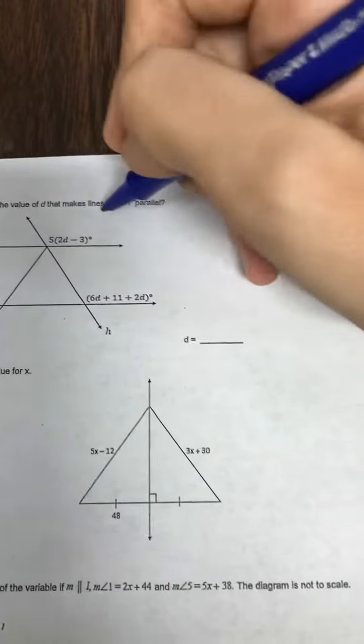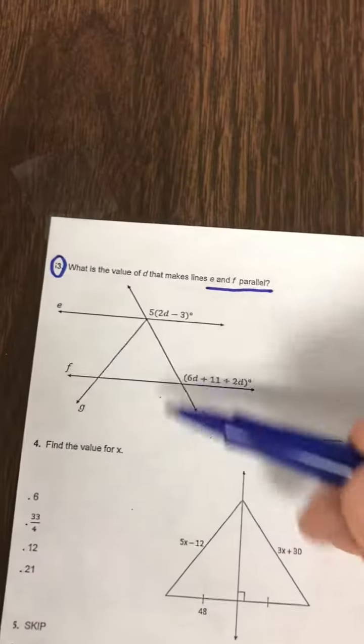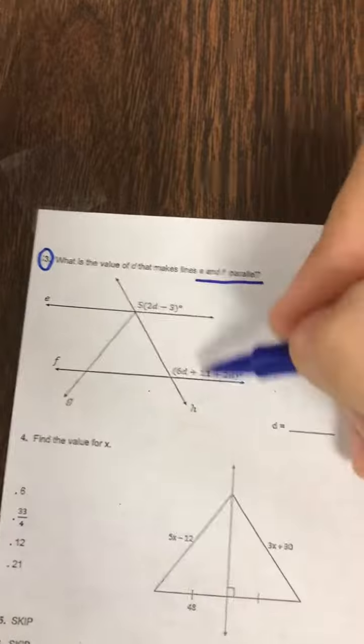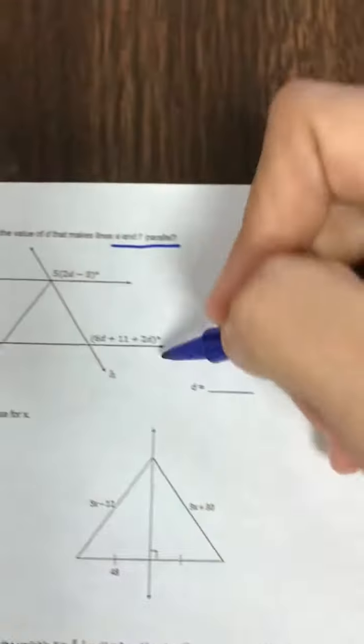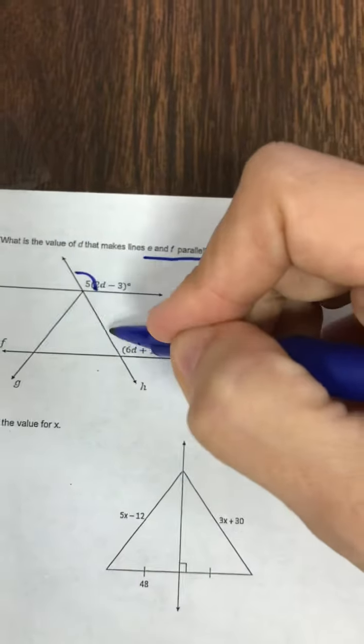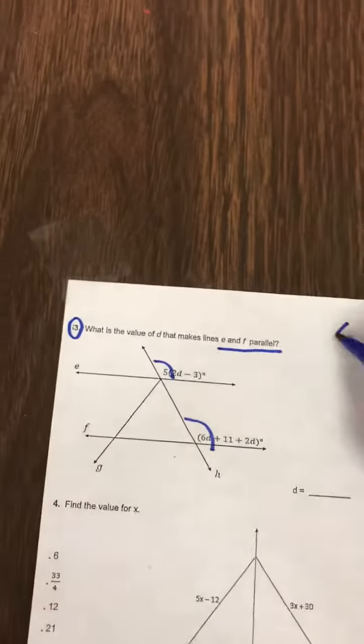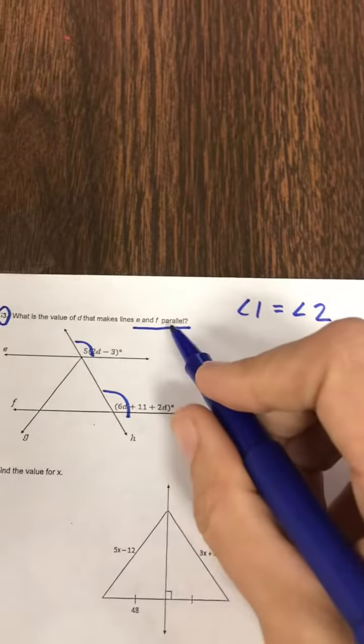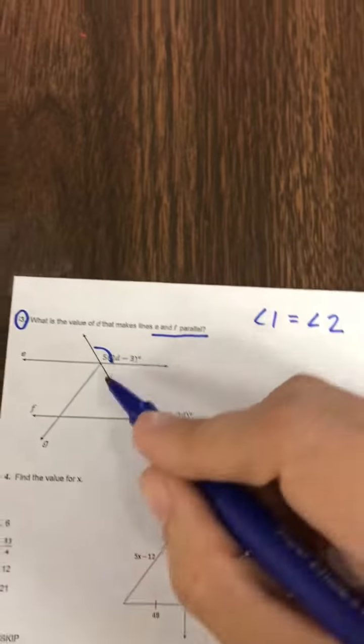It says, what value of D would make the line E and F parallel? So it looks like they're parallel, but if in fact these two angles were equal, it would actually prove that it's parallel. So we're going to take both of these angles and set them equal to each other.